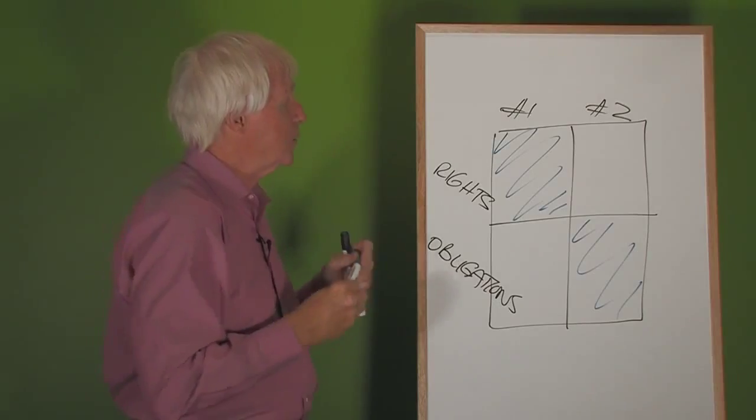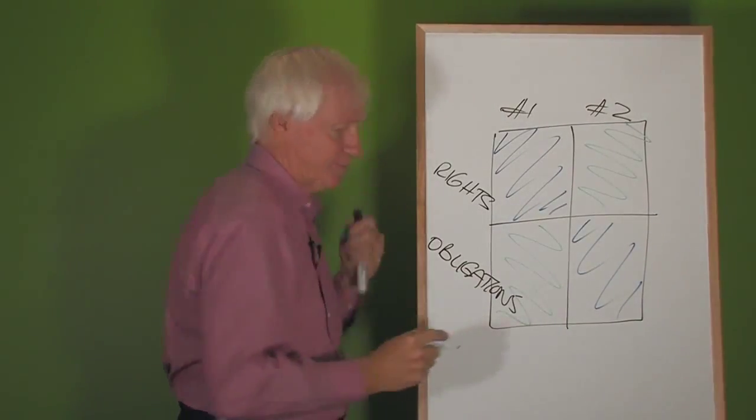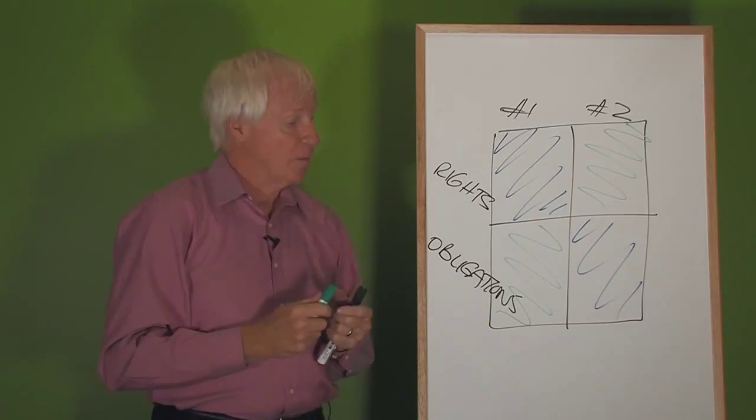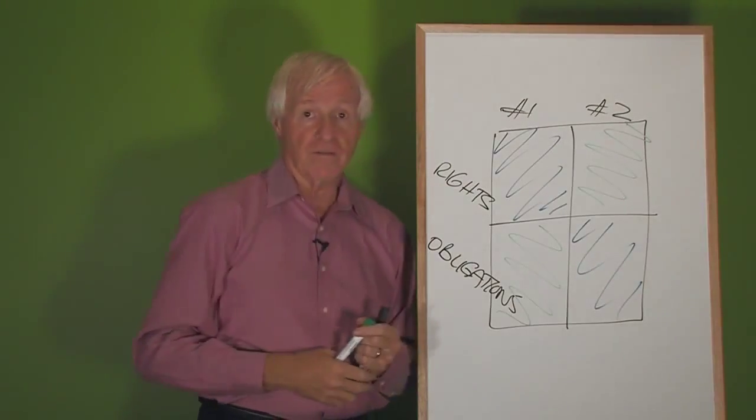Party two talks about their rights and party one's obligations. That's understandable, and at the same time, the important part is that everybody understands what's in all four squares.